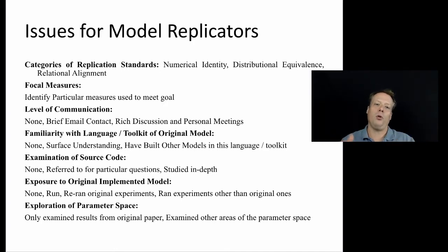In order to communicate replication to someone else, it is important to talk about how much contact the model replicators had with the model authors. The reason why is because that might indicate that there's some content that was not in the original published version of the model. Do they have no contact? Brief email contact? Rich discussion and personal meetings to discuss it?